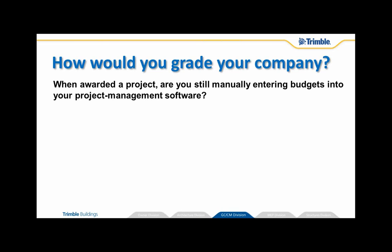Before we get started, there are a few questions I would throw out there as food for thought. You might think about these things and position your company as it relates to the answers. First: when you're awarded a project, are you still manually entering budgets into your project management software? Or do you take every awarded project and have that information flow electronically from your estimating system into your project management software, reducing the possibility of errors and omissions in those budgets?